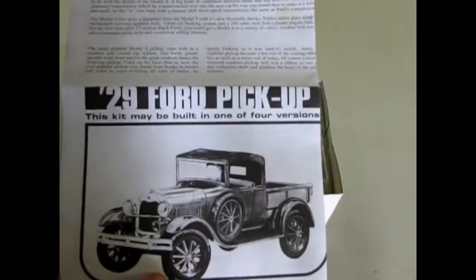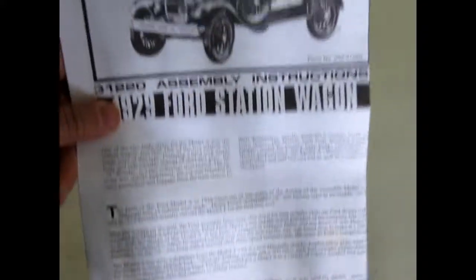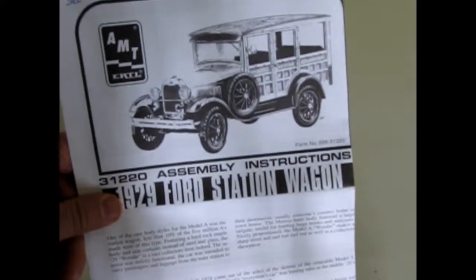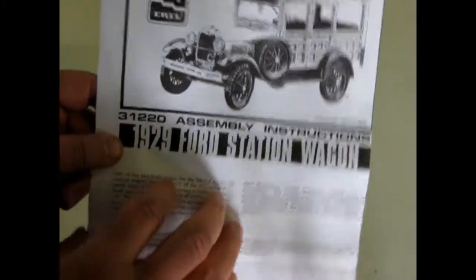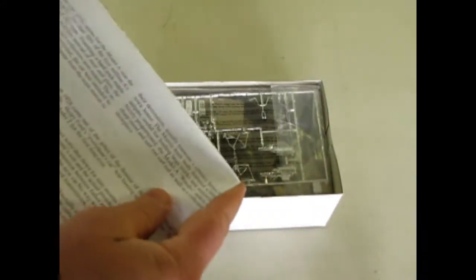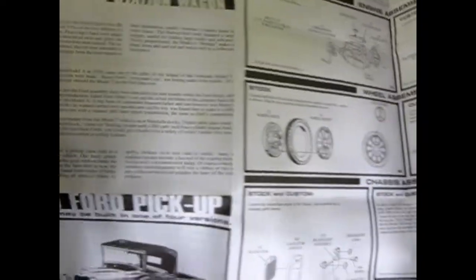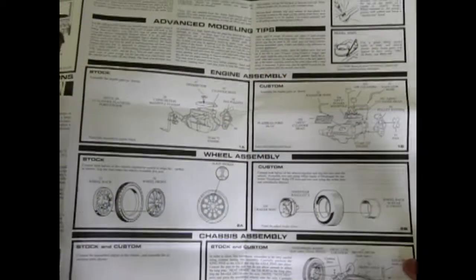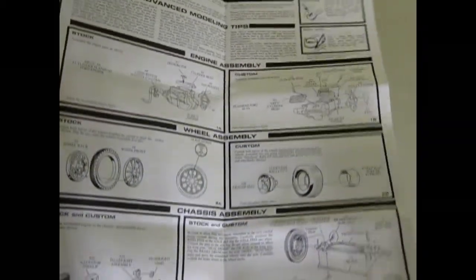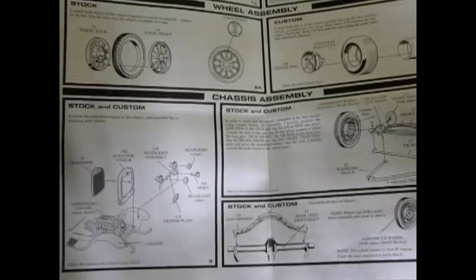As it says you can build this as a pickup truck or as the wooden wagon, otherwise known as the Woody. The instructions are very nice. They give you a history of it. The Model A Ford followed the Model T Fords and came out in 1929. As you can see, are the instructions. It gives you full detail on the engine and the wheels and everything.